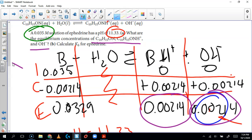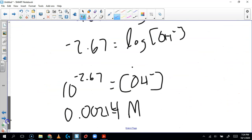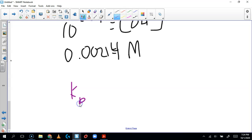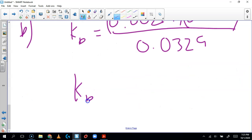Well that's just a matter of doing the math now and plugging this in. So for part b, Kb equals 0.00214 times the concentration of the hydroxide ion 0.00214 all over the concentration of the reactants at equilibrium 0.0329 and then we can do that math. And when we do that we get a Kb equal to 1.39 times 10 to the minus 4.